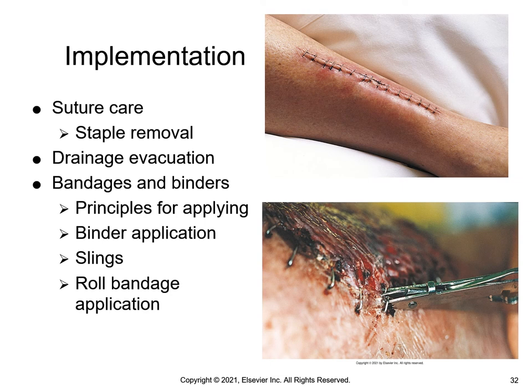To remove staples, insert the tips of the staple remover under each wire staple. While slowly closing the ends of the staple remover together, squeeze the center of the staple with the tips, freeing it from the skin and gently lifting up and out. When drainage interferes with healing, evacuation is achieved using either a drain or a drainage tube with continuous suction. Drainage evacuators are portable units that connect to tubular drains in the wound bed, exerting a safe, constant, low-pressure vacuum to remove and collect wound drainage.